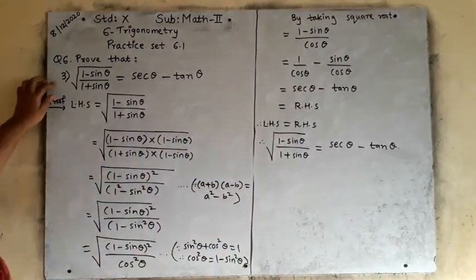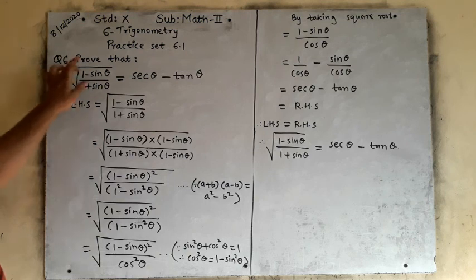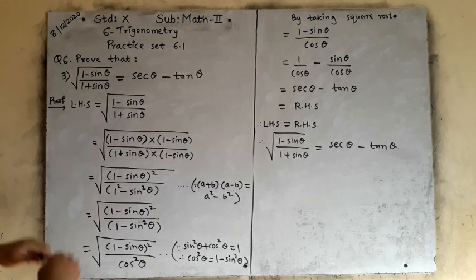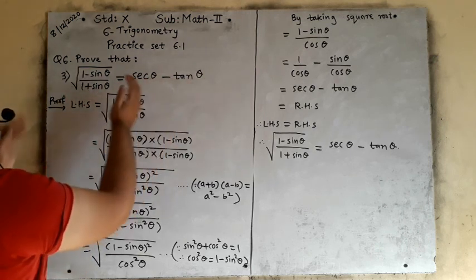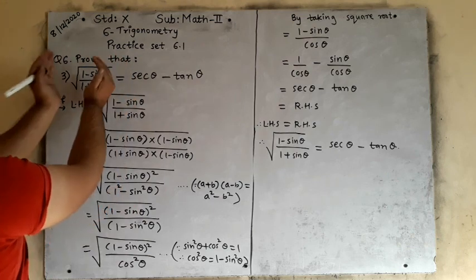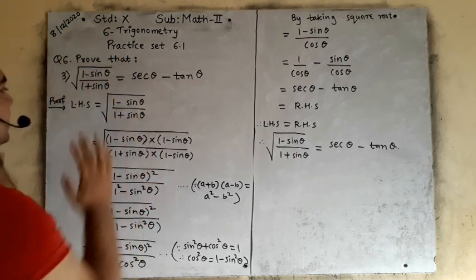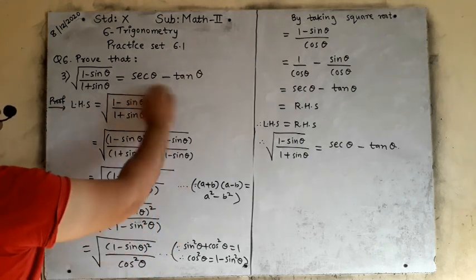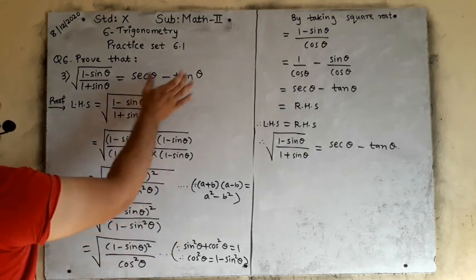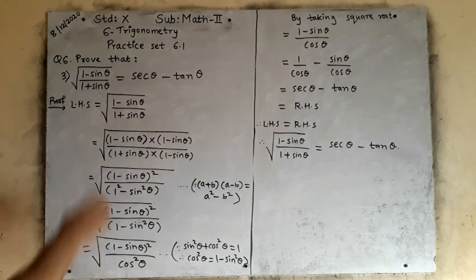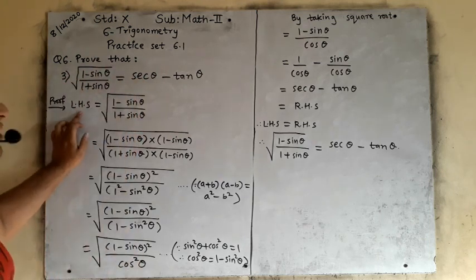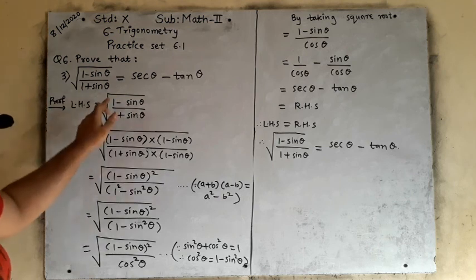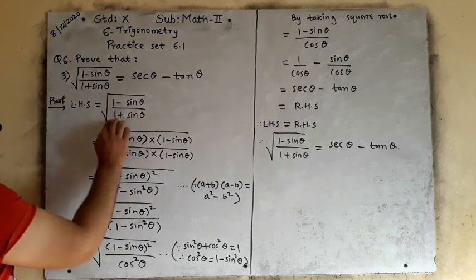Now we will see question number 3 of question number 6. That is: proof that the square root of (1 minus sin theta) upon (1 plus sin theta) is equal to sec theta minus tan theta. We will utilize only the left hand side to make it equal to the right hand side.